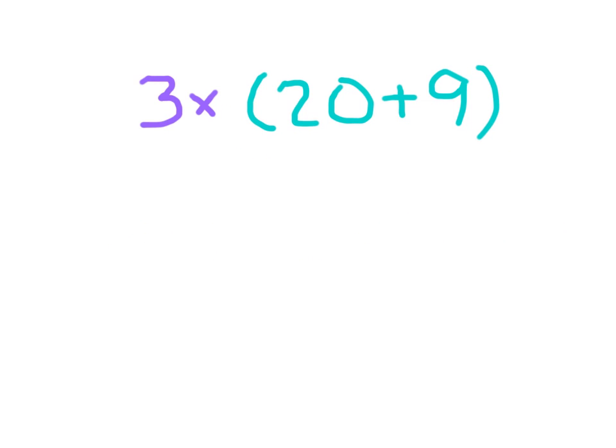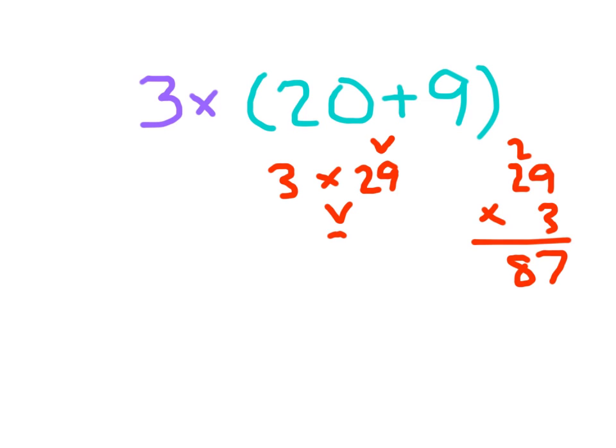If we were to write 3 times 20 plus 9, if we evaluated this, we would say 20 plus 9 is 29 and this is just 3 times 29. 29 times 3, 7, 2, 3 times 2 is 6 plus 2 is 8, would evaluate to 87.